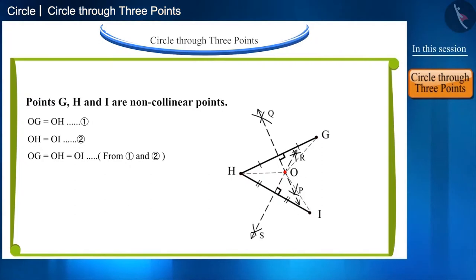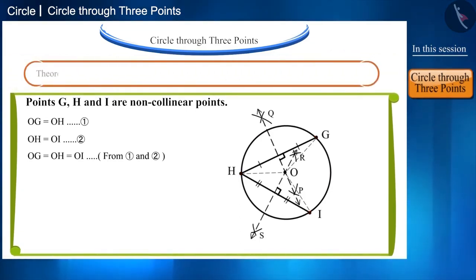So, if we draw a circle by assuming point O as the center and O, G as the radius, then it will also pass through O, H and O, I. And this is a unique circle, that is, we cannot draw any circle other than this that will pass through these three non-collinear points. Thus, we have proved that we can draw one and only one circle passing through the given three non-collinear points.